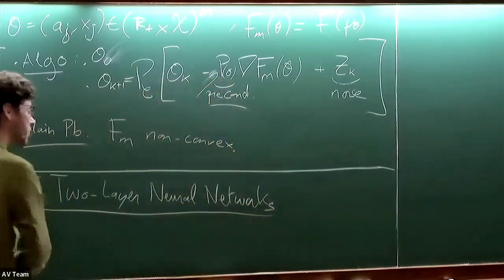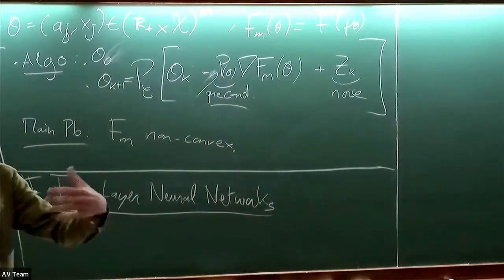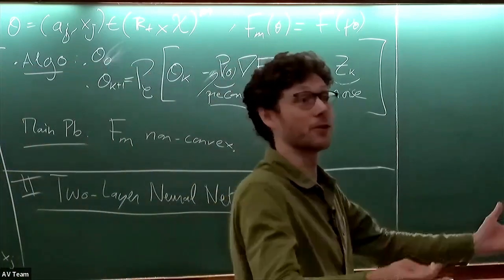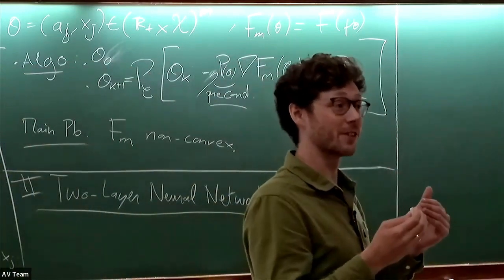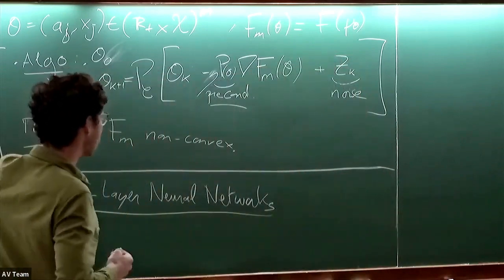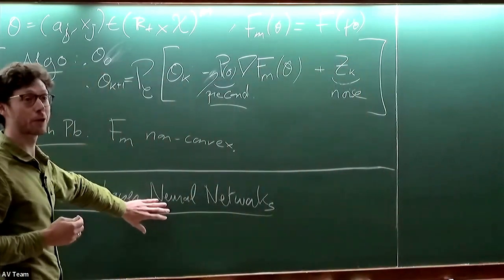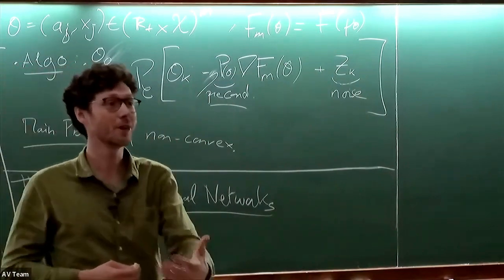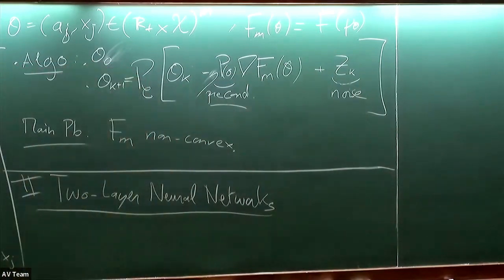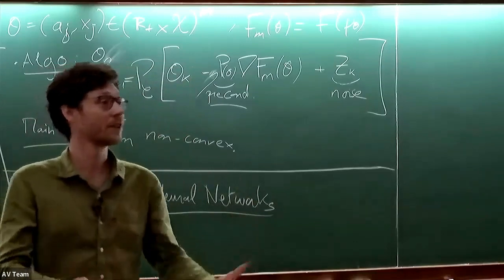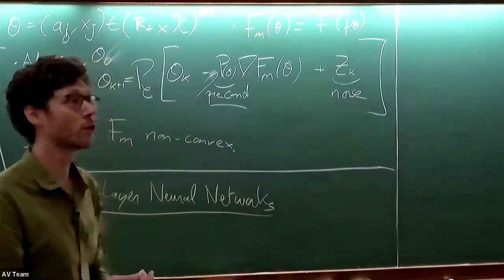The motivation is that neural networks, although not formulated as optimization over the space of probability measures as such, can be reformulated as a problem in this class. When you train a neural network using standard backpropagation, it turns out to perform an interesting algorithm when interpreted in the space of probability measures. This is a nice way to introduce these algorithms, though they can be applied to other problems as well.